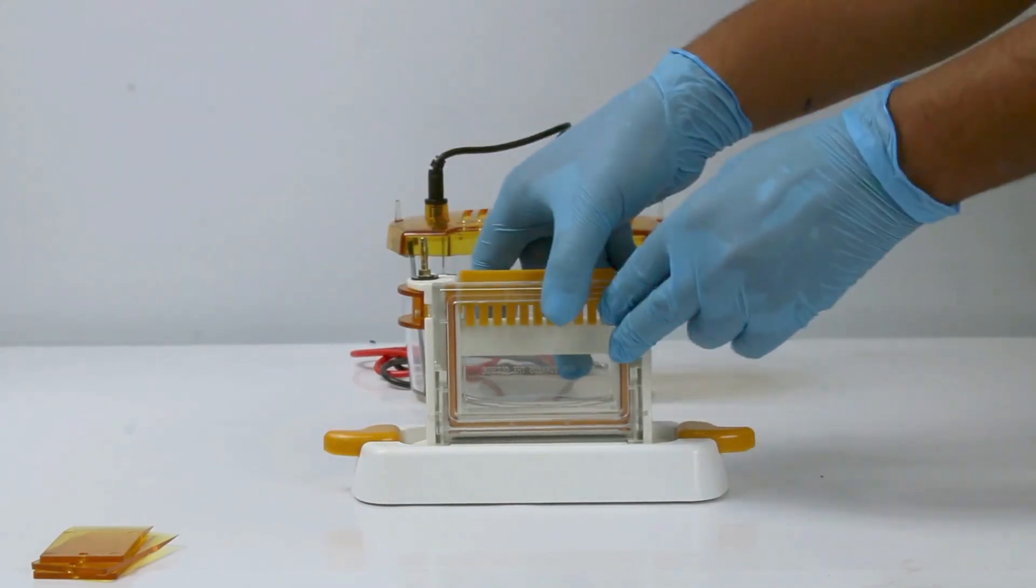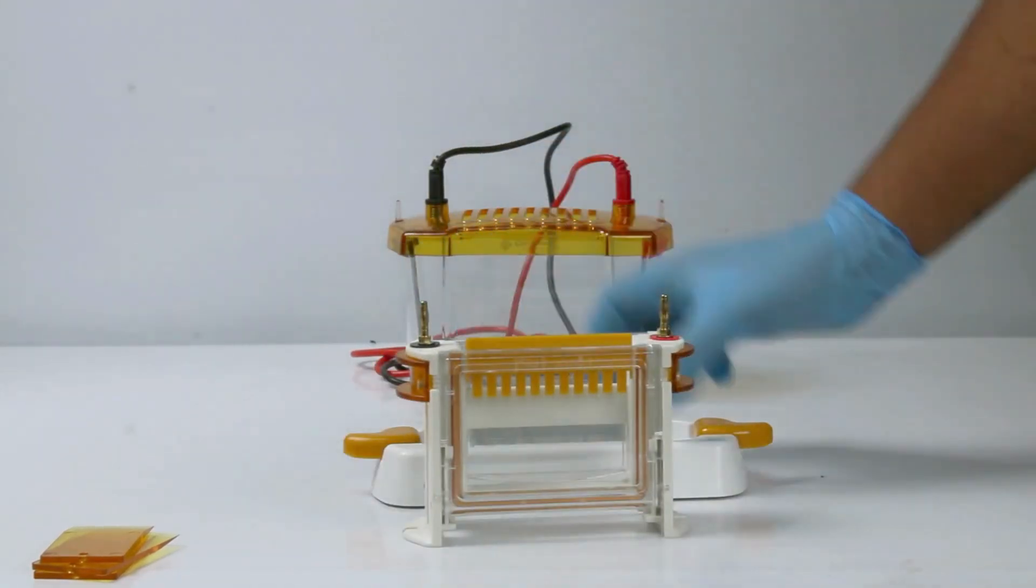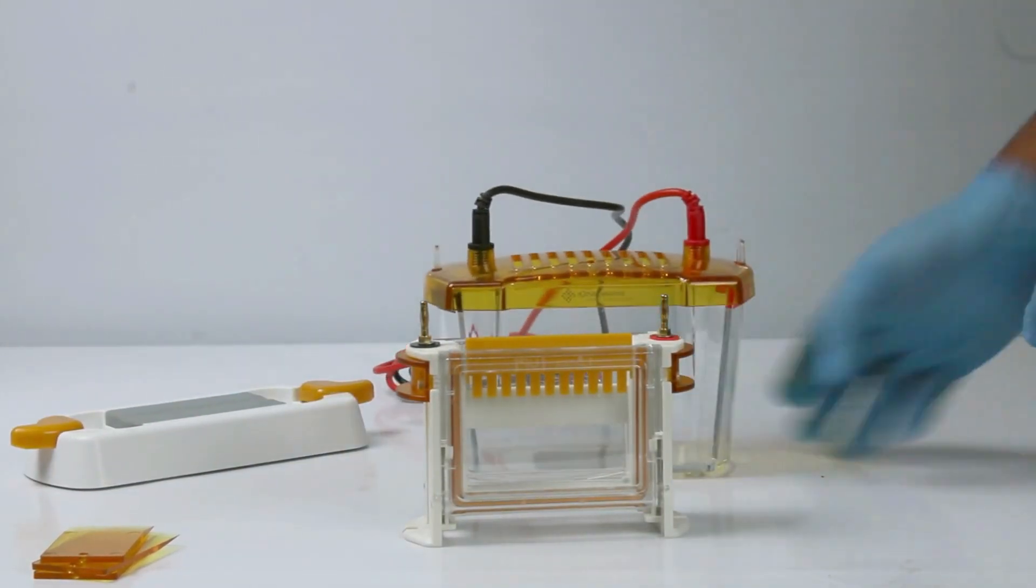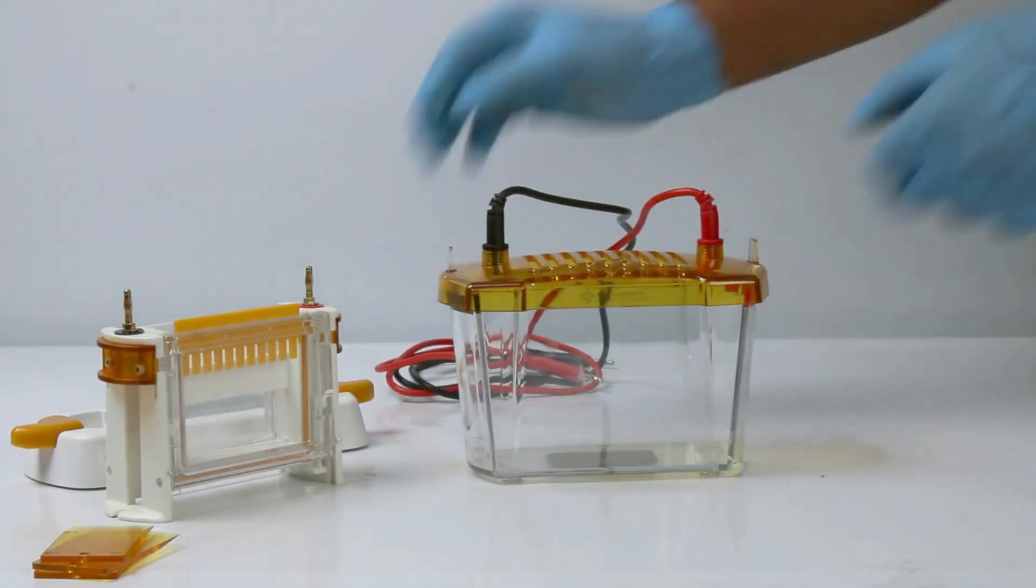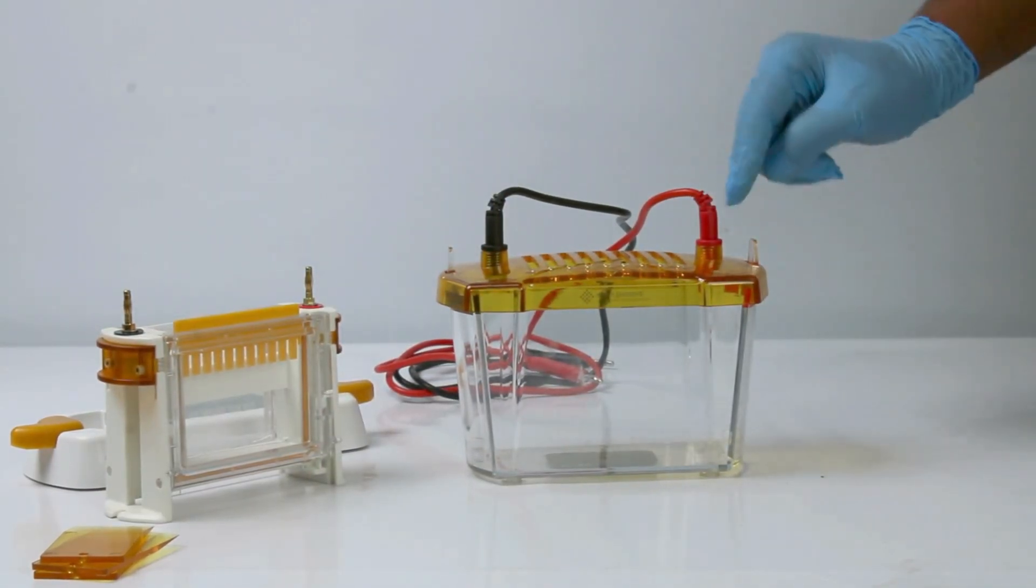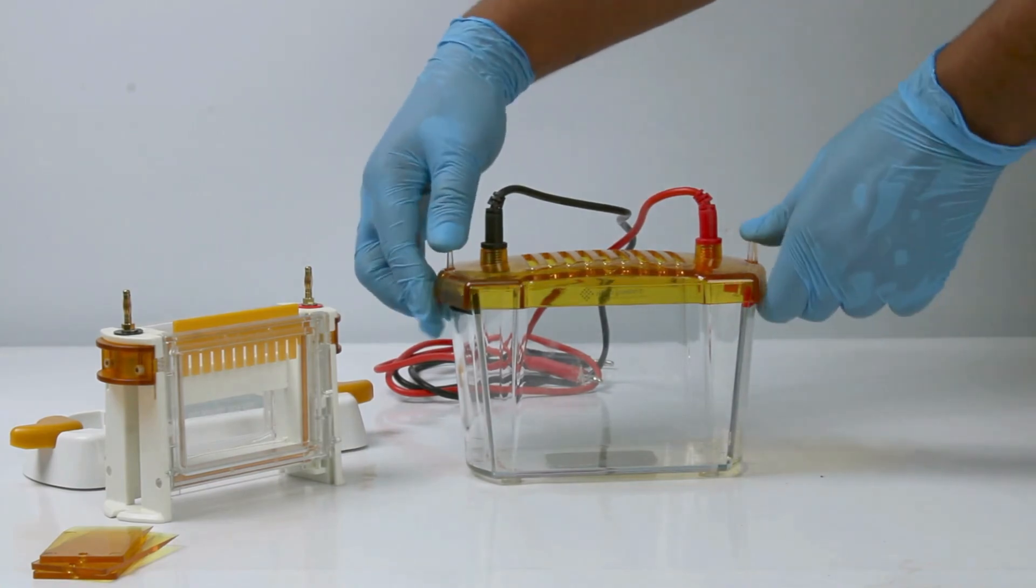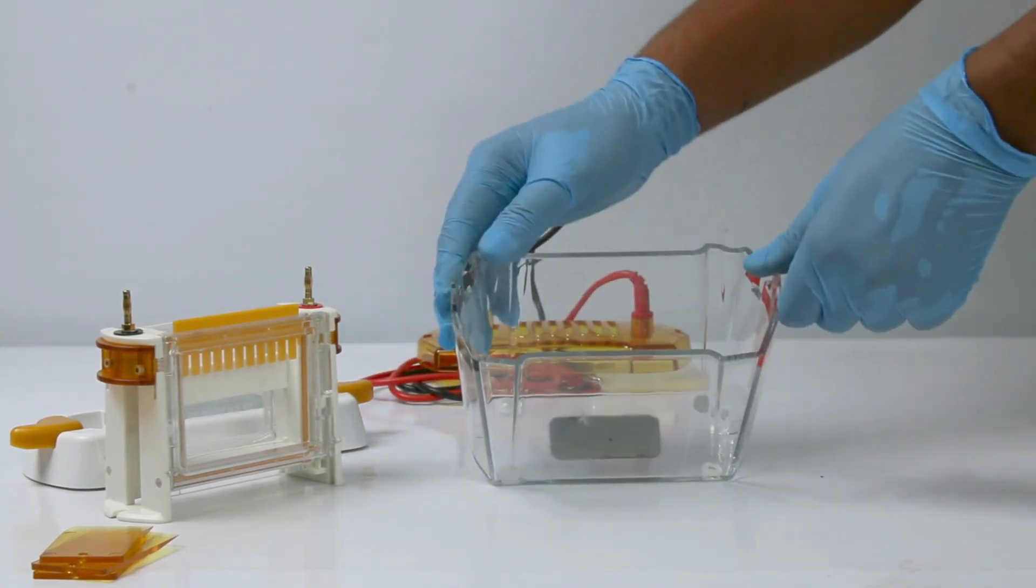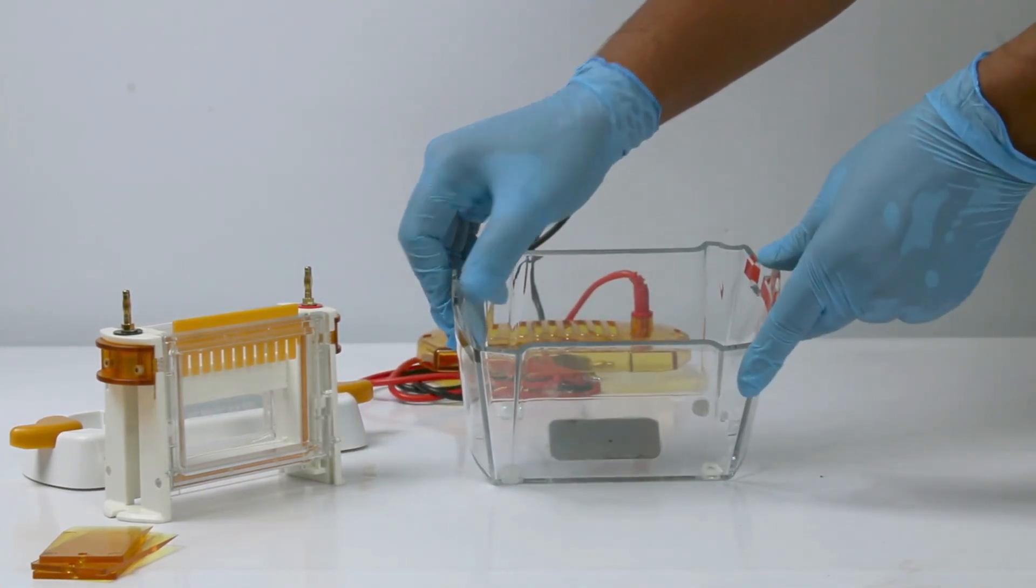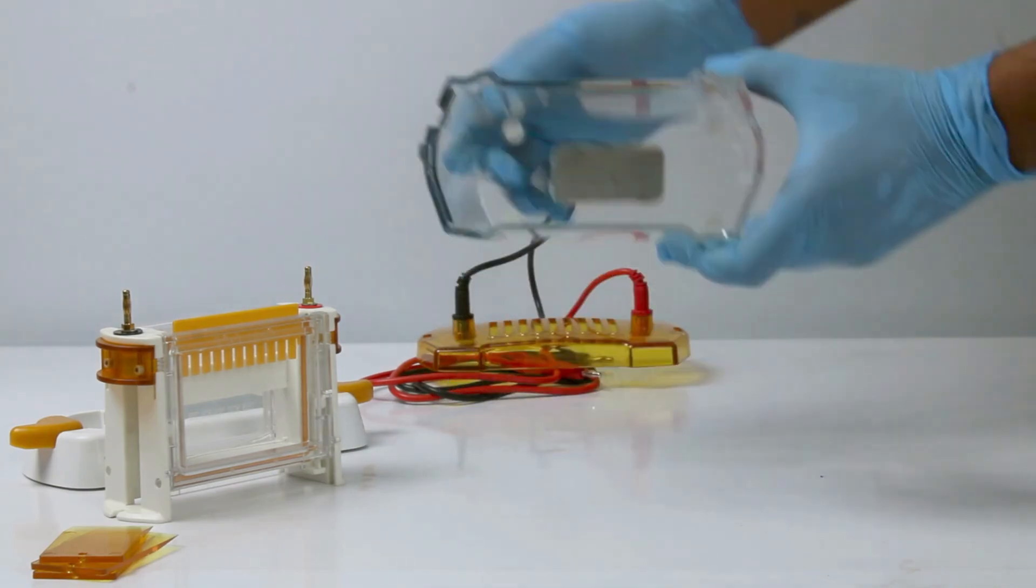Remove the electrophoresis bracket and place it in the electrophoresis tank. Now let us proceed with the electrophoresis procedure. Insert the electrophoresis bracket into the tank. Add the buffer to the main chamber of the electrophoresis bracket.